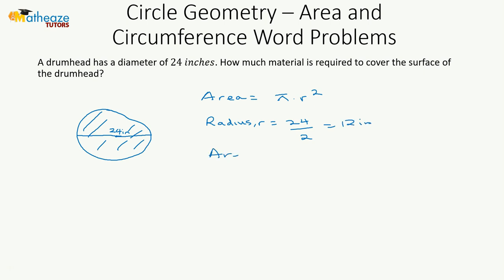Radius R is 24 divided by 2, which is going to be 12 inches. So the area is going to be pi multiplied by 12 squared, which is 144 inches.